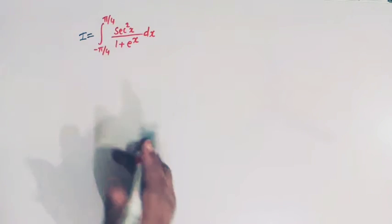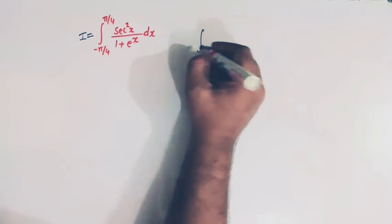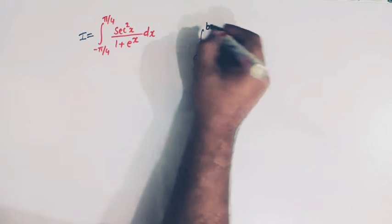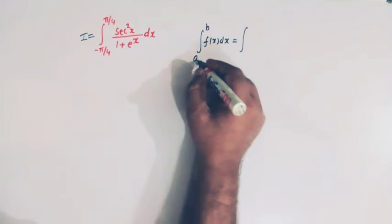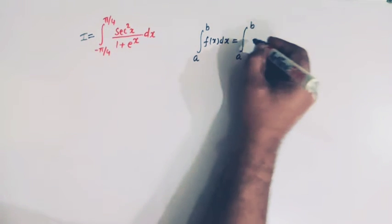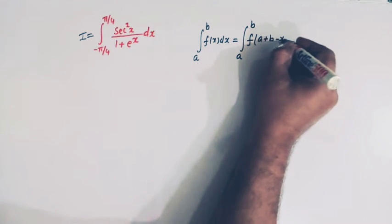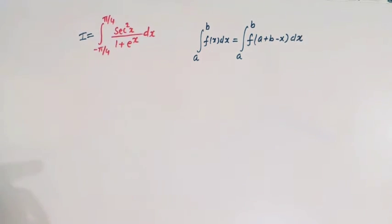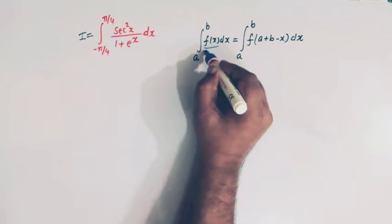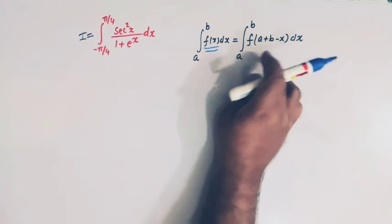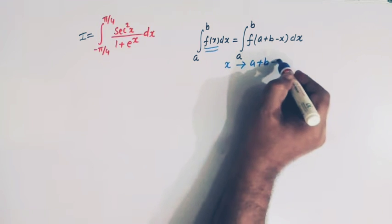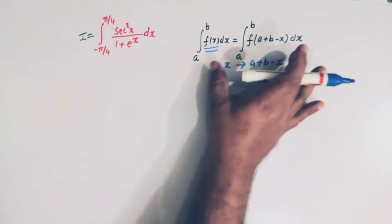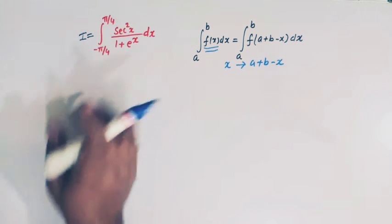Before proceeding further, let us see the property which will be used to evaluate this integral. We know that if we have the integral from a to b of f(x) dx, then we can also write this as the integral from a to b of f(a plus b minus x) dx. So in the original integral we have the function f(x), and in the next step we replace x by a plus b minus x.